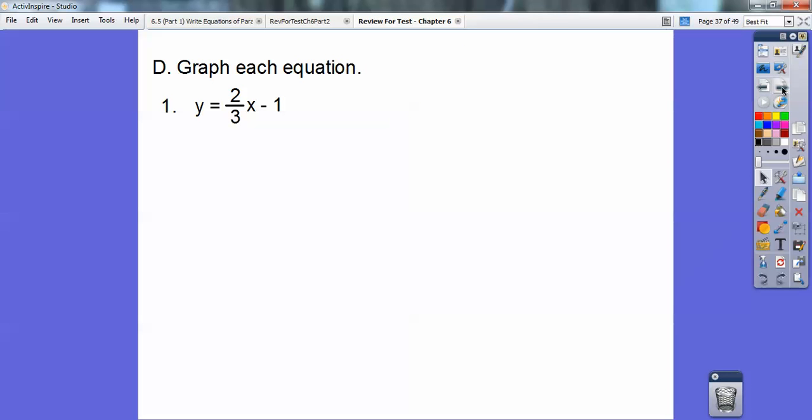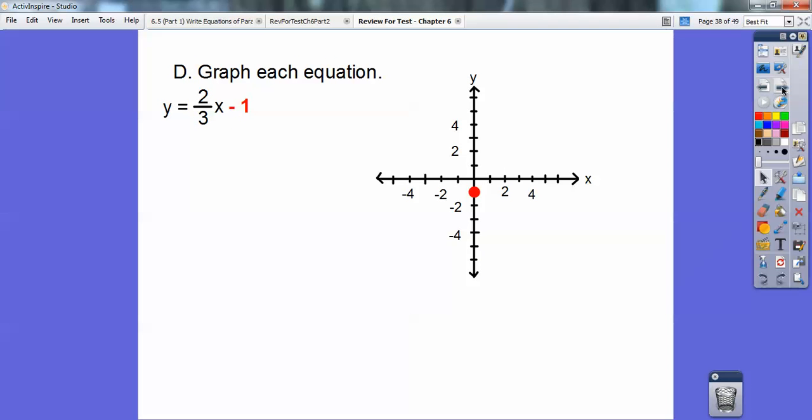Graph each equation. This one's in slope intercept form. So we're going to first graph that minus 1 right there. This is my y intercept. I'm going to graph that minus 1. And then from there, I'm going to use this slope, you guys. The slope is 2 thirds. So from this point, I'm going to go up 2 to the right 3. And then put a point right there. And then there we go. And then connect them up with the line. Don't forget to write your equation on the line.